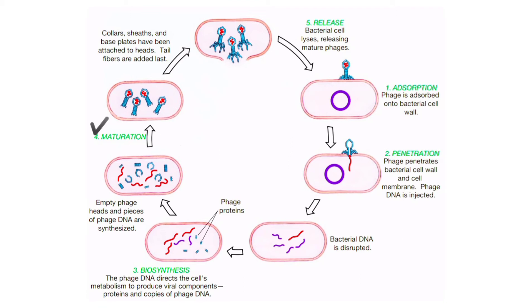The next step is maturation. The head of a T4 phage is assembled in the host cell cytoplasm from newly synthesized capsid proteins. Then a viral double-stranded DNA molecule is packed into each head. At the same time, the phage tails are assembled from newly formed base plates, sheaths, and collars. When the head is properly packed with DNA, each head is attached to a tail. Only after the heads and tails are attached are the tail fibers added to form mature and infective phages.